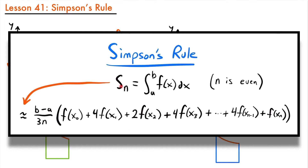Here we have Simpson's rule. We have S sub n — the S stands for Simpson's rule — where n is the number of subintervals. That's going to be equal to the integral from a to b of our function dx. Given that n is even, meaning we have an even number of subintervals, the area under this function from a to b is approximately equal to this formula: b minus a divided by 3 times n, which could also be written as delta x divided by 3, where delta x is b minus a divided by n.